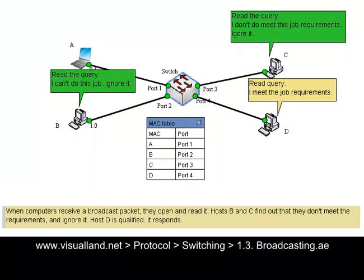When computers receive a broadcast packet, they open and read it. Hosts B and C find out that they don't meet the requirements, and ignore it.